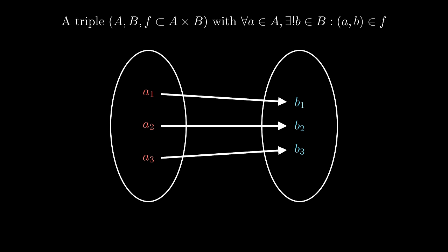A function is a triple, A, B, and F. A is a domain, B is a codomain, and F is a subset of the Cartesian product of A and B, such that for any element in A, there exists one and only one element in B, such that the tuple, A and B, belongs to F.